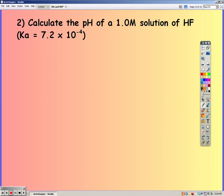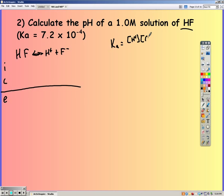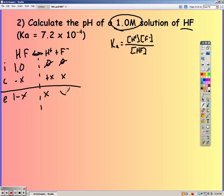Go ahead and pause the video, and try this one on your own, restarting when you have your answer. So on this one we have HF this time, or hydrofluoric acid. So it breaks apart into hydrogen and fluorine ions. Setting up our equilibrium expression. We have a 1 molar solution, so we can fill in our ice table. Minus X, because our reactants are decreasing. Plus X, because our products are increasing.